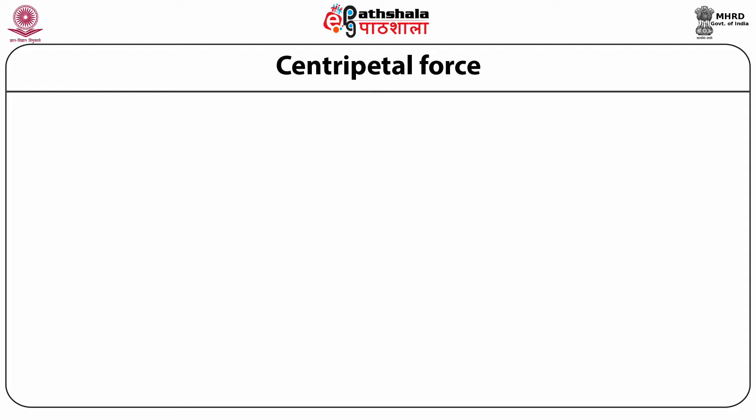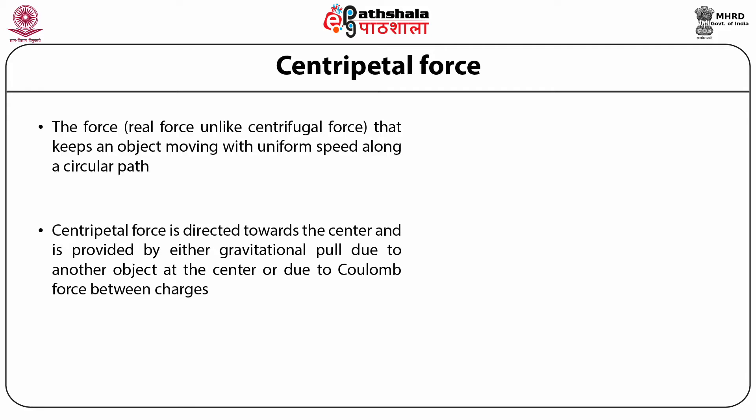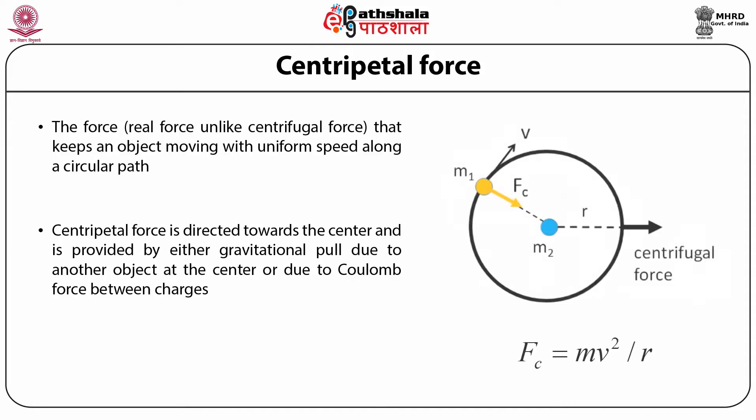Centripetal force is also experienced by a particle of mass m moving with velocity v in a circle of radius r. The difference between centrifugal and centripetal force is that the centripetal force is directed toward the center of the circle. The centripetal force keeps the object moving with uniform speed along the circular path and must be generated by some source — for example, gravitational pull or Coulomb force between two charged particles. Mathematically, F_c = mv²/r.